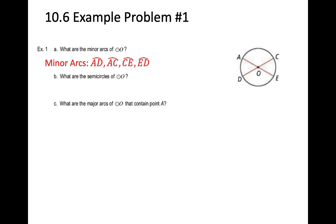What are the semicircles of circle O? There are two diameters: AE and DC — both cut the circle in half. So DAC and CEA are semicircles cut by diameter DC, and ACE and EDA are semicircles cut by diameter AE.